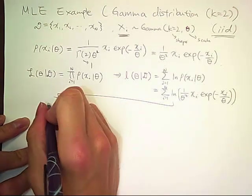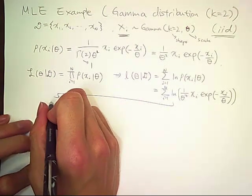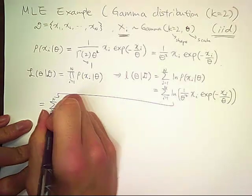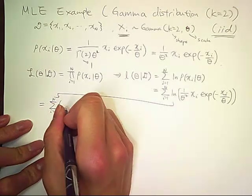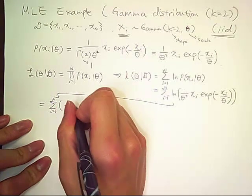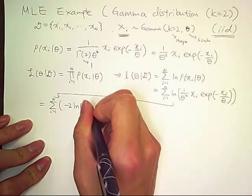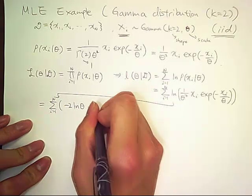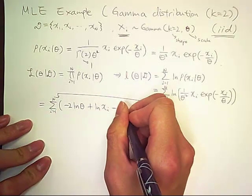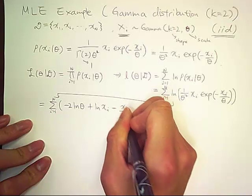And we can simplify this to sum of negative 2 log theta plus log of x sub i minus x sub i over theta.